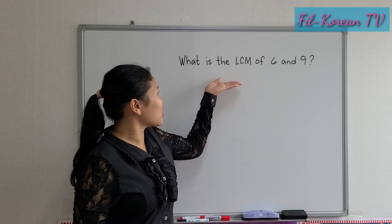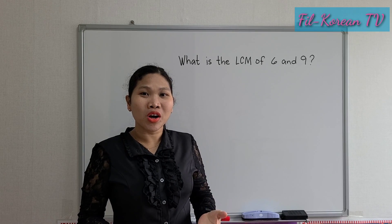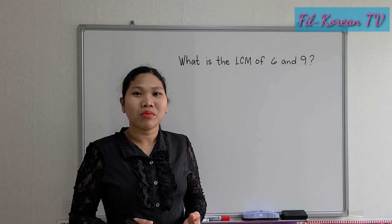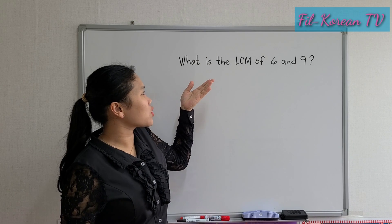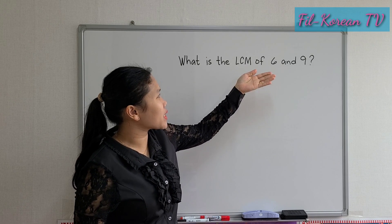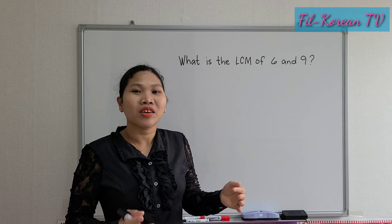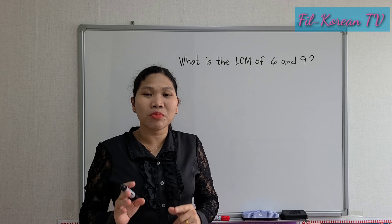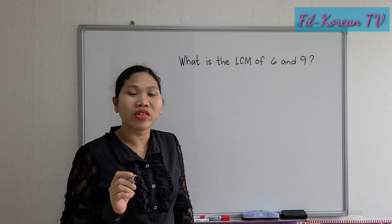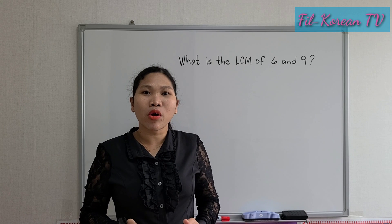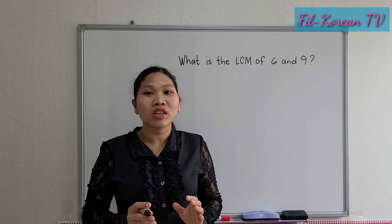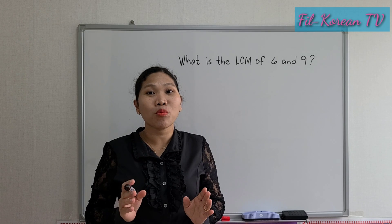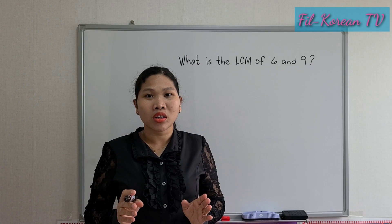Now let us take this question to show the different methods in finding the LCM or least common multiple. The question is: what is the LCM of 6 and 9? I will show you how to get the LCM of 6 and 9 in three methods. We will start with the listing method. In the listing method, we are going to list the multiples of 6 and 9 until we find the common number or common multiple of the given numbers.